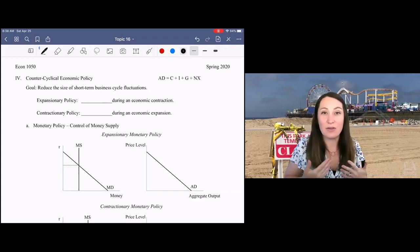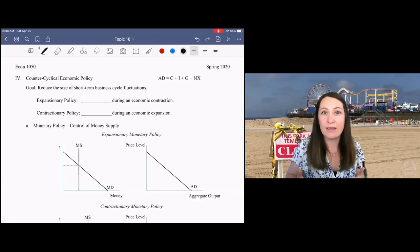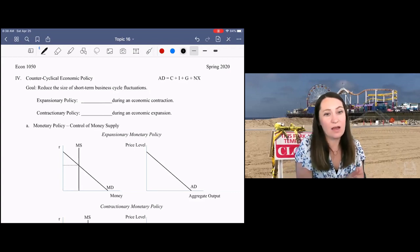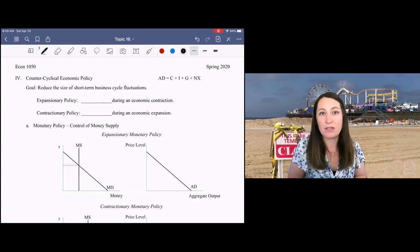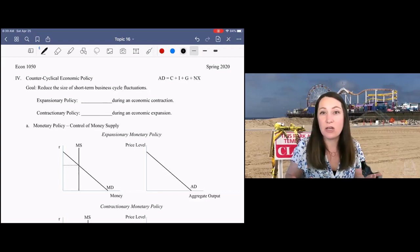Those short-term business cycle fluctuations are costly because people lose their jobs in economic contraction, it increases inequalities, makes us unsure about economic conditions over time. So the government aims to reduce business cycle fluctuations, meaning they would like to boost the economy during recessions, but also slow the economy to decrease economic growth during a rapid expansion.